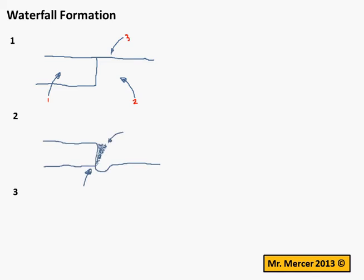In diagram two, you want to show that the erosion of the soft rock at point four undercuts the hard rock. You should mention the two processes of erosion that are relevant here.